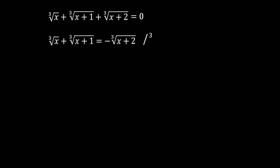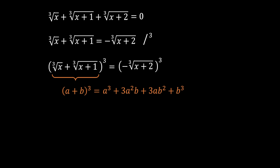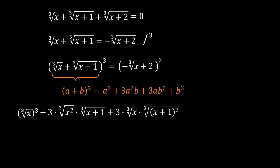From here we can now raise everything to the cube — it is safe to do so now, because on our left side we only have two terms and on the right side only one term. On the left side we have the cube root of x plus the cube root of (x + 1), all raised to the cube. Using the cube of binomial formula — a³ + 3a²b + 3ab² + b³ — and substituting our terms, we get: x + 3·(cube root of x²)·(cube root of (x+1)) + 3·(cube root of x)·(cube root of (x+1)²) + (x + 1), all equal to minus (x + 2).